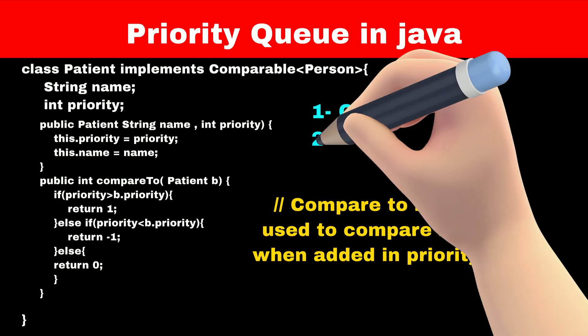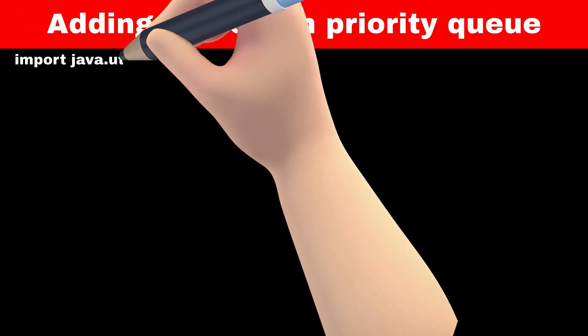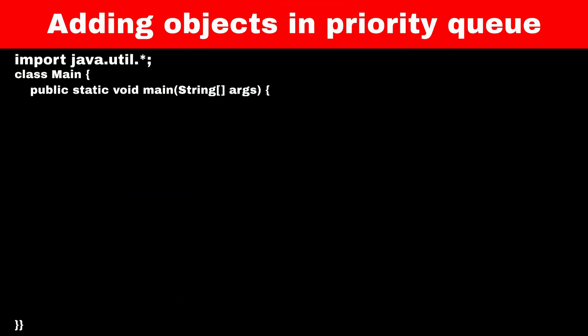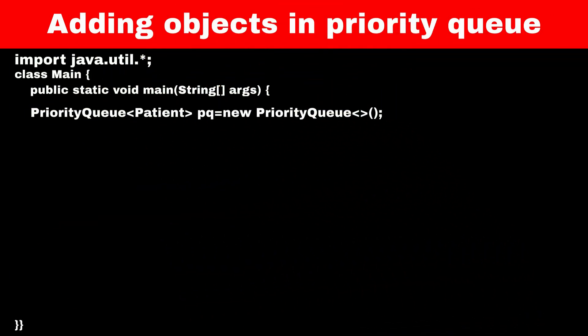For this video, we will have three priorities: first is critical, second is moderate, and third is minor. A patient with priority one is critical. The priority queue is part of the java.util package, so first we have to import it. Next, create an object of the priority queue class in the main method. The syntax is like creating an object of any other class — first the class name, which is PriorityQueue, then the data type in angle brackets, which is the Patient class, then the name of the object, and then the constructor.